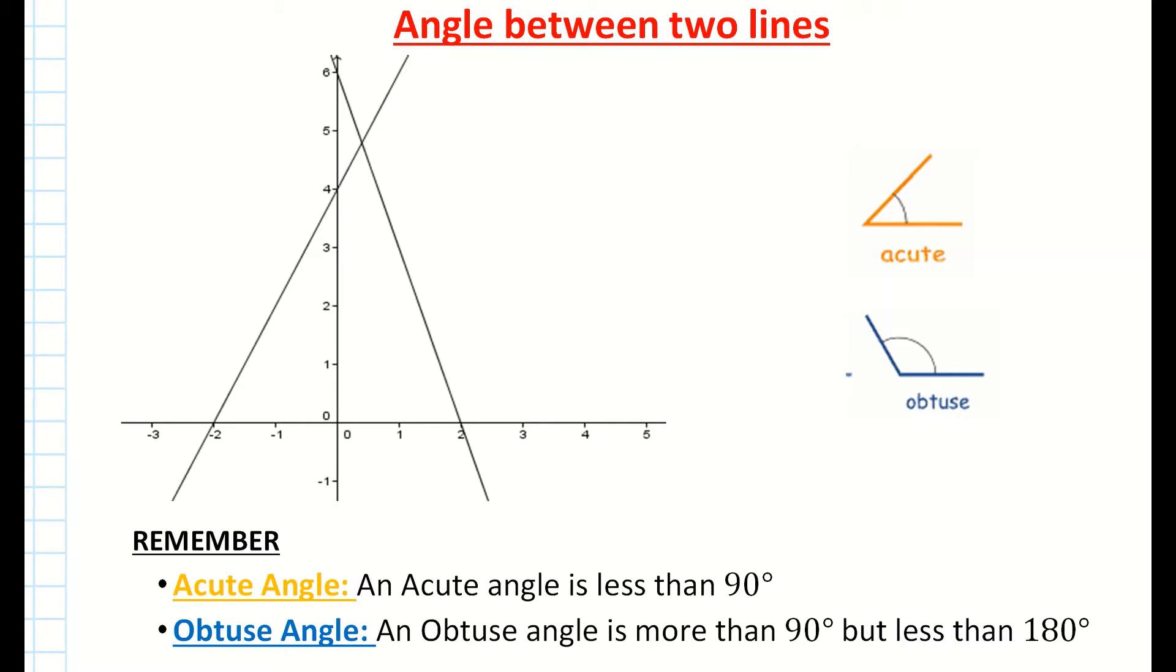The acute angle, as you know, is the smaller angle, which is less than 90 degrees, and your obtuse angle is the angle greater than 90 degrees. So just be careful when you're reading the question as to which one you're asked for.